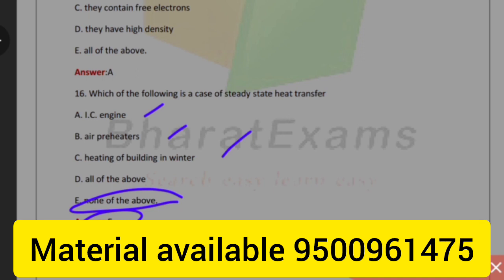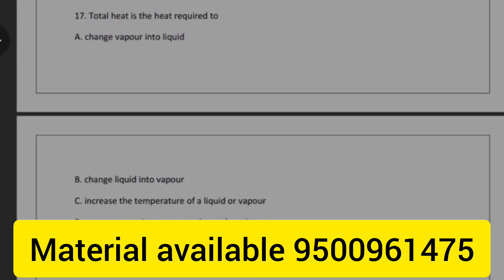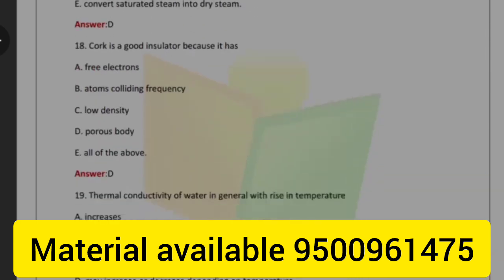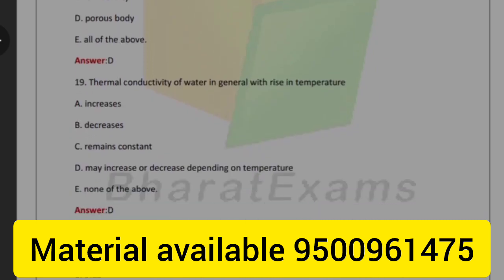Total heat is the heat required to convert water into steam and superheat. Rock is a good insulator because it has porous body.